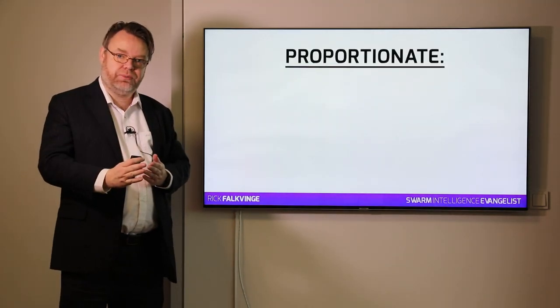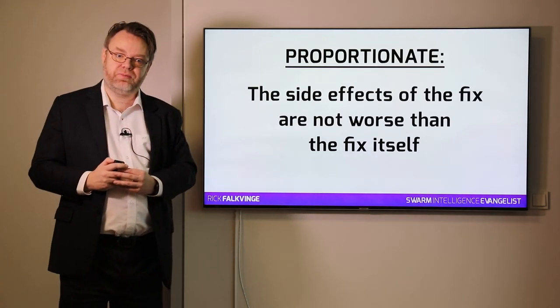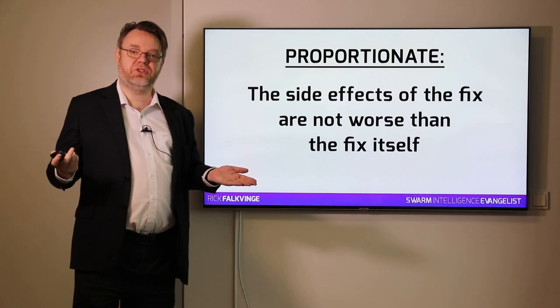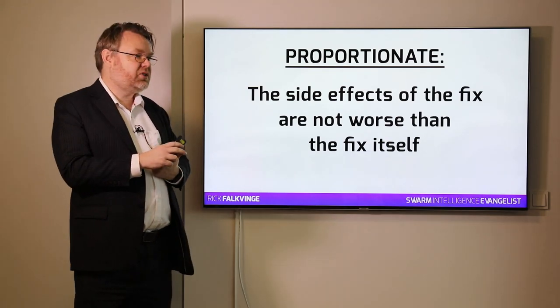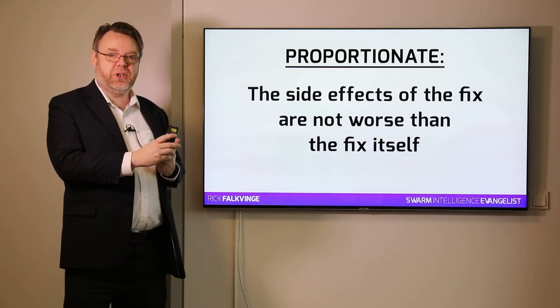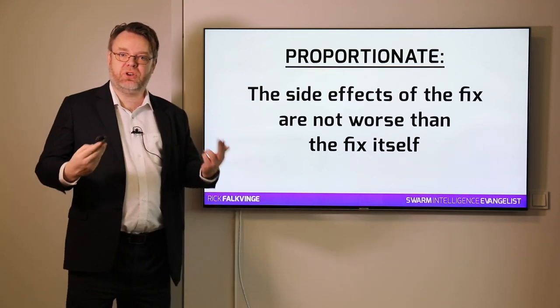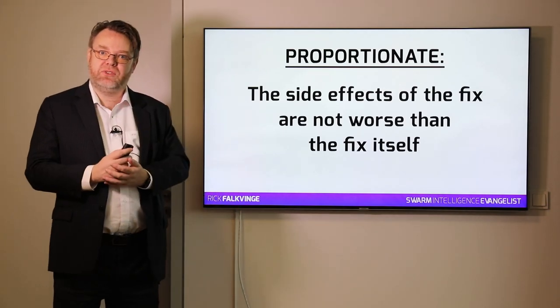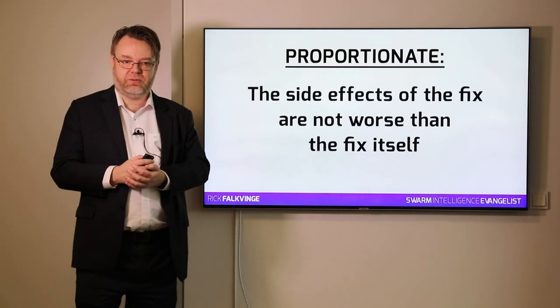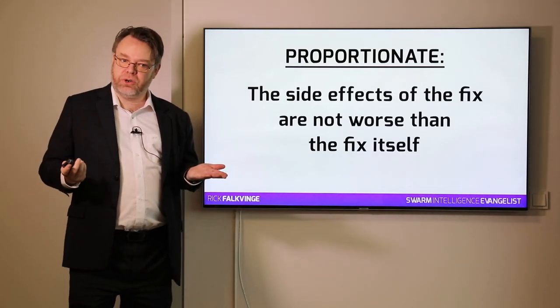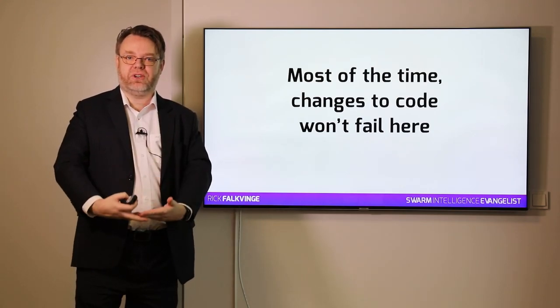Last but not least, 'proportionate.' This means that the side effects of the fix are not worse than the fix itself. For example, if you're looking at mass surveillance legislation, it's easy to say that it's necessary because crime exists in society. It's easy to say that it's effective because it helps catch criminals. But it's not proportionate because the damage it causes to society is worse than the damage it fixes—at least that's my take on it. Regrettably, the politicians in charge usually have a different idea of proportionality in mass surveillance. But in terms of code, most of the time, changes to code will not fail here. They will not introduce changes that are worse than the fix itself.